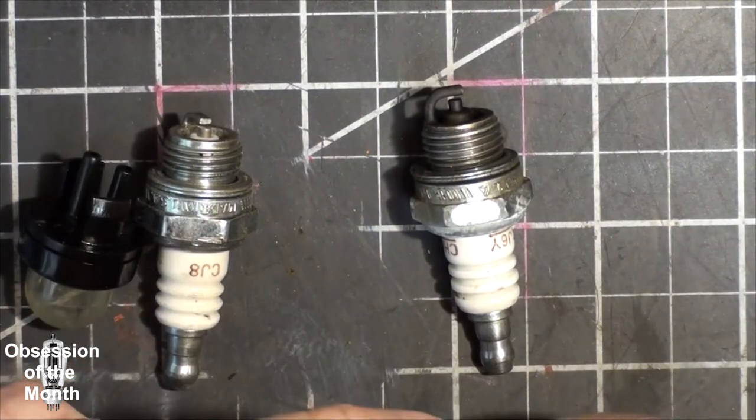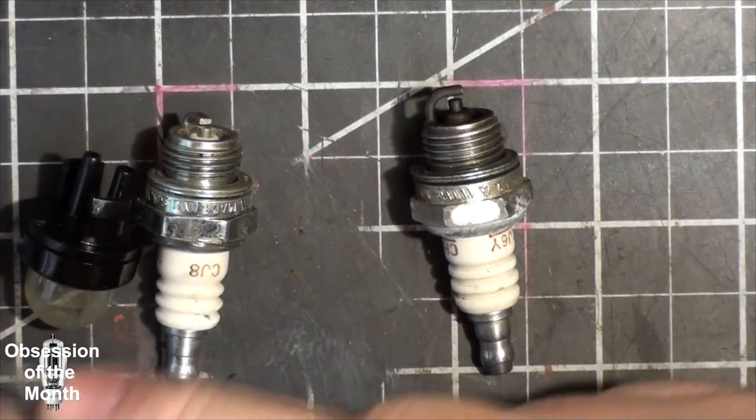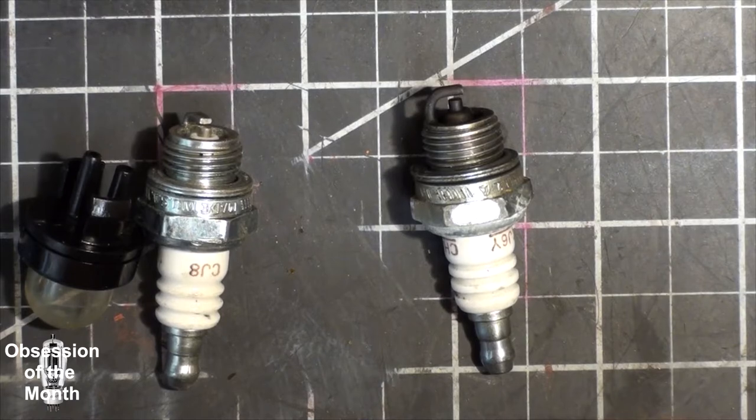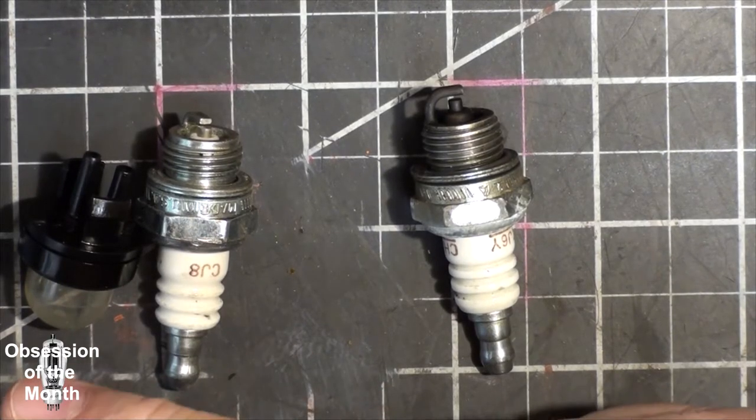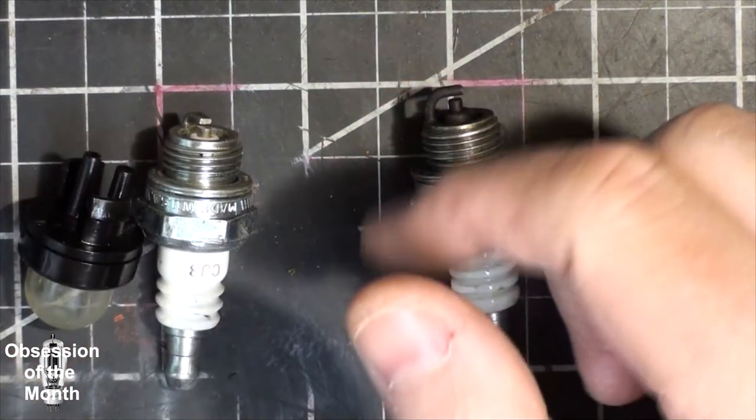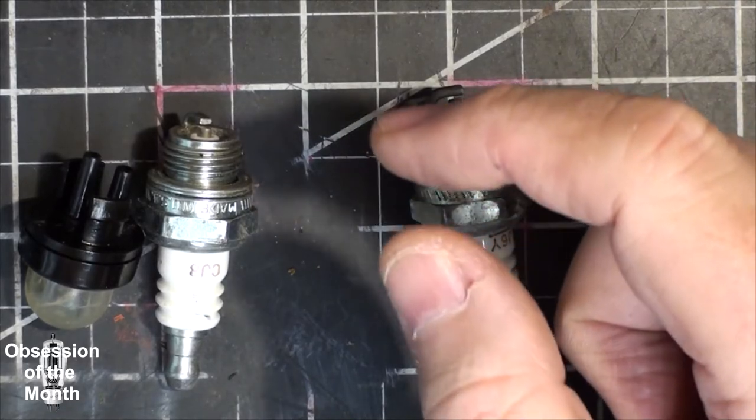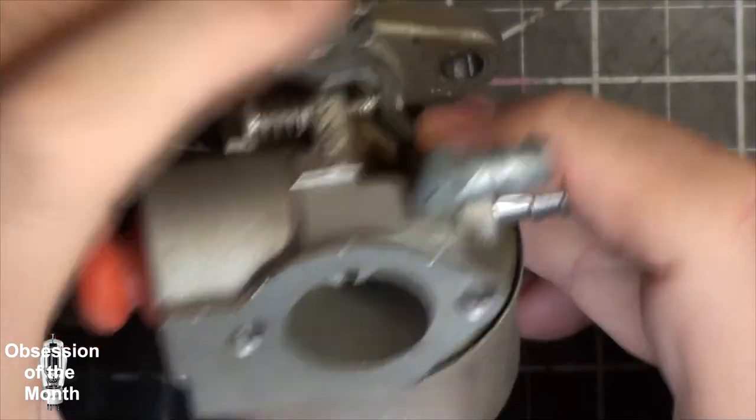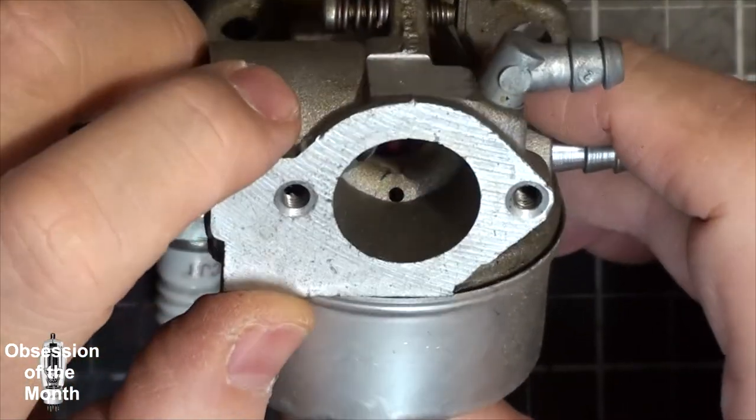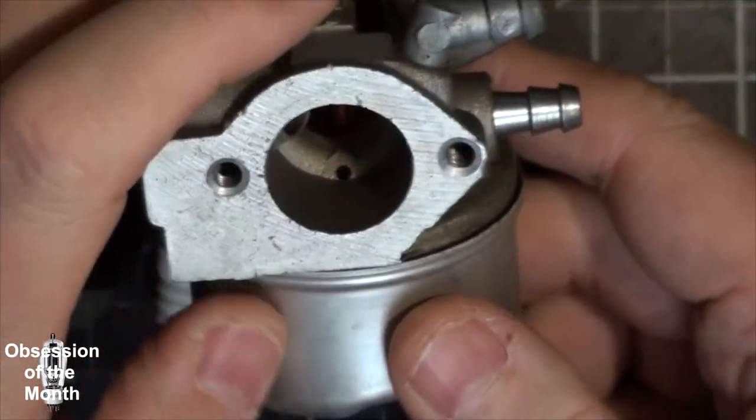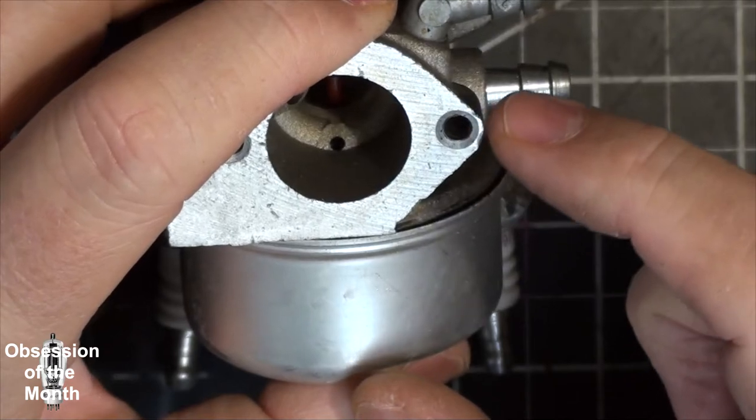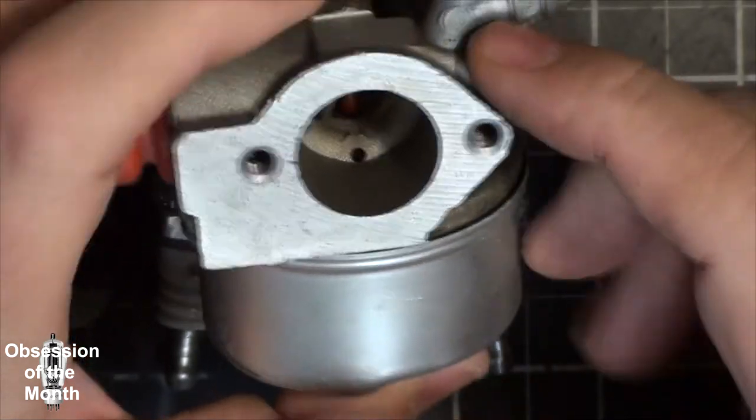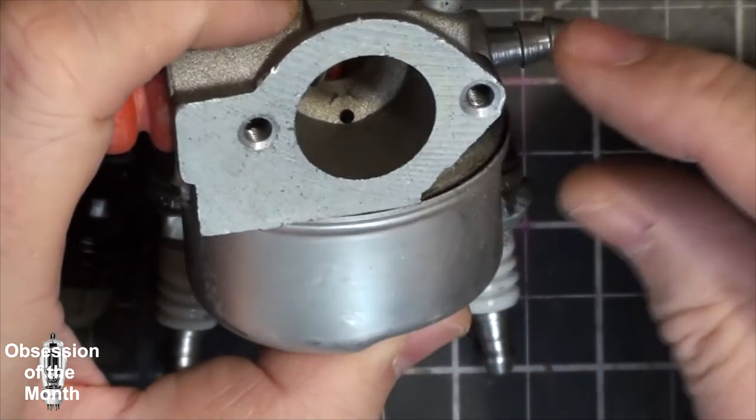The primer bulb ones oftentimes take two, three, five, ten pulls to get them going. A lot of times one of the problems is that the primer bulb isn't doing anything. On some of the newer Quantum engines, the primer bulb is actually part of the gasket.